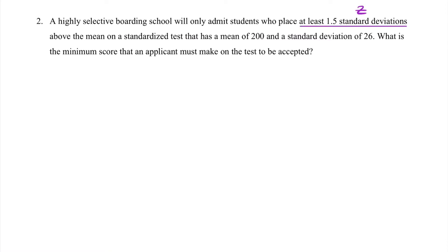They give us the mean and the standard deviation, but they ask us what is the minimum score that an applicant must make, which means now instead of looking for z, we're looking for x. Remember, z is the number of standard deviations away from a mean, while x is a value in context of the story.